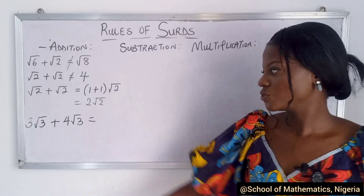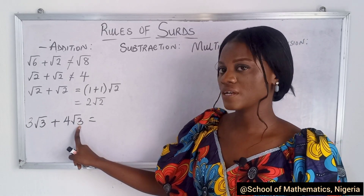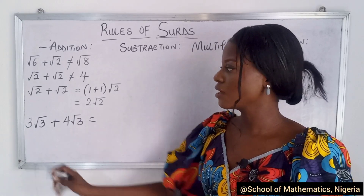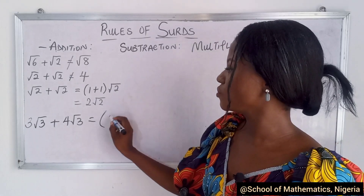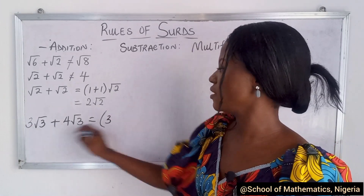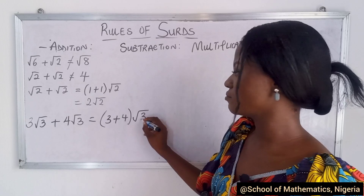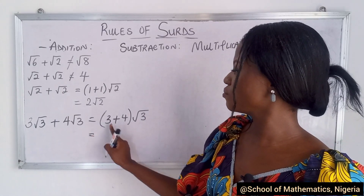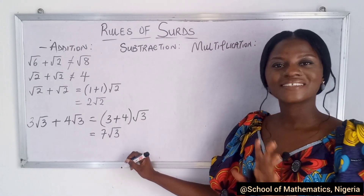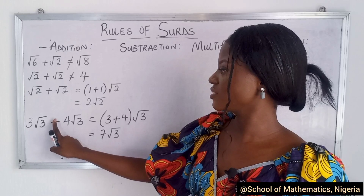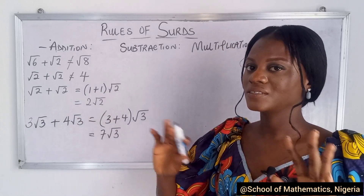Given something like 3 root 3 plus 4 root 3, the first thing to check is whether the radicals are the same — and they are, so we can add them. You have 3 outside and 4 outside, so 3 plus 4 gives you 7 root 3. Root 3 is the common factor, just like factorization. The same applies for subtraction: if you have a subtraction sign, just say 3 minus 4, or 1 minus 1 — the same principle applies.